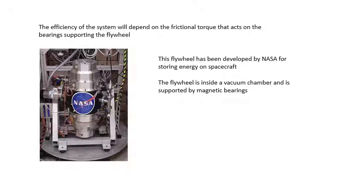The efficiency of this system obviously depends on the amount of friction — specifically a frictional torque. These flywheels will be on a shaft supported by bearings, and there's nearly always friction at bearings, a frictional torque. Every time it spins round you'll be losing energy due to friction. This flywheel has apparently been developed by NASA for storing energy on spacecraft. Inside the container there's a flywheel whizzing round in a vacuum chamber, so there's no air resistance, and it's supported by magnetic bearings — so this is incredibly efficient. It's a way of storing kinetic energy on a spacecraft.